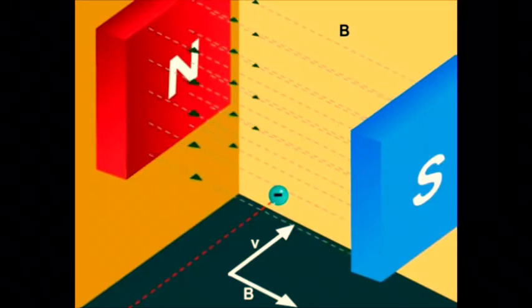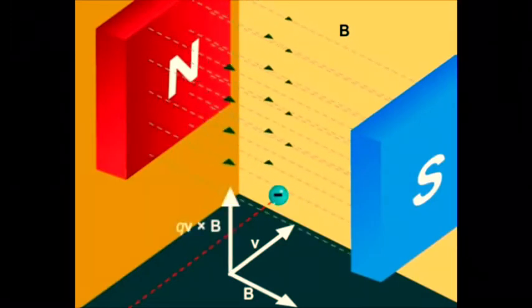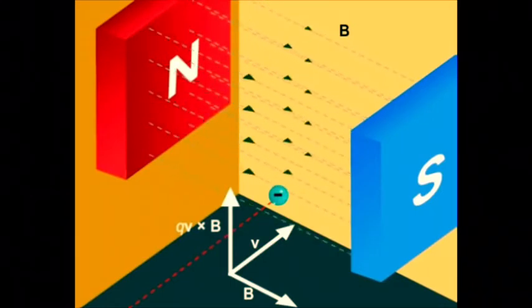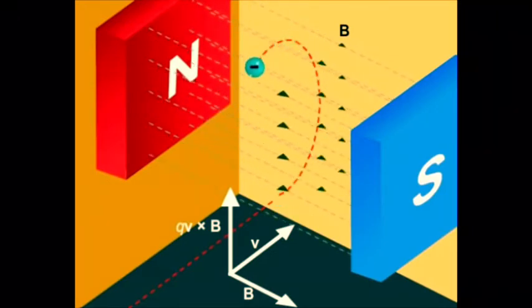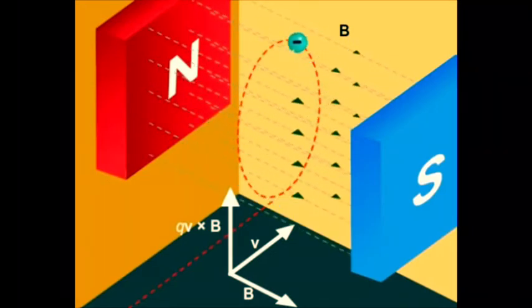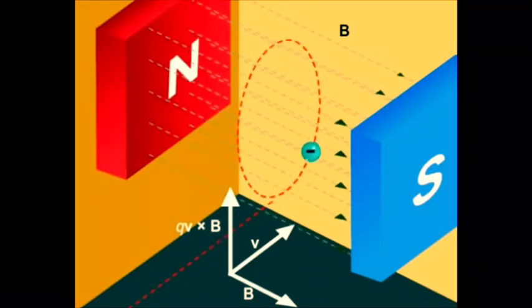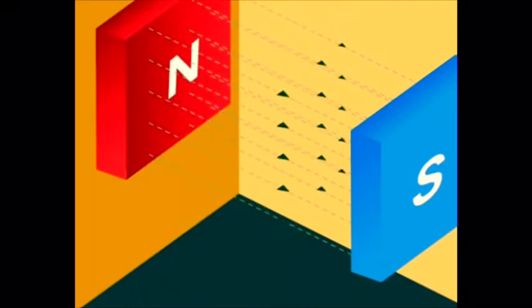The force F = Q V × B acts as a centripetal force perpendicular to the velocity, so the charge moves in circular motion when F, V, and B are all mutually perpendicular.